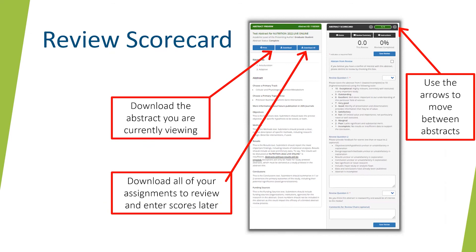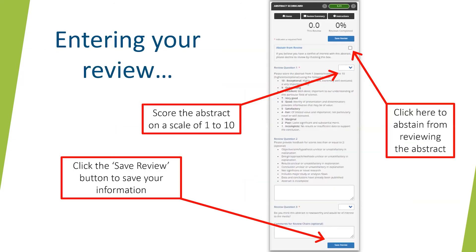The abstract will be on the left and the review questions will be on the right. On this screen, you can download the abstract you are currently viewing, download all of your assignments to review and enter scores later, or use the arrows at the top right of the page to move between abstracts. If you believe you have a conflict of interest with an abstract, please decline to review by checking the box at the top. After reviewing the full abstract information, you will use the gray box on the right to enter your review information. Question 1 asks you to score the abstract from 1 (lowest/incomplete) to 10 (highest/exceptional). Question 2 asks you to provide feedback for scores less than or equal to 2. Question 3 asks you if you think the abstract is newsworthy and would be of interest to the media. You can also provide additional comments for the review chairs — this is optional. Click the Save Review button to save your information; it can be revised at any time before the review deadline.